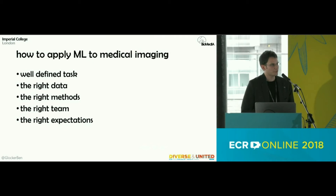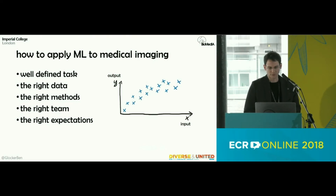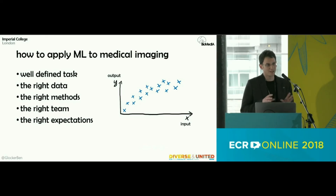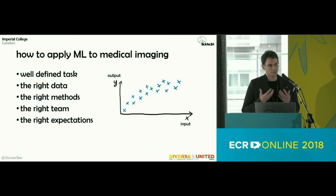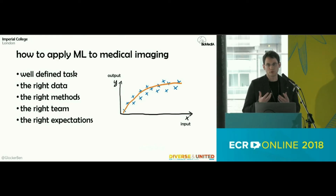It's important to keep in mind that machine learning — what people call AI — is really function approximation. You have input and output, and if there's no association between them, machine learning will not work. At the end of the day, you're fitting or approximating a function that might be very complex and unknown. That's all you do when you use machine learning.